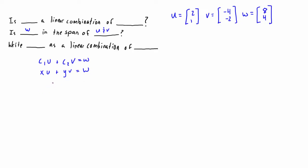So what we want to do is, just like in the last video, we set this up as an augmented matrix. Whatever is on the right-hand side goes in the furthest right column, and whatever these vectors are goes in all the other columns on the left-hand side. So we start out with the shape of the augmented matrix: a column for U, a column for V, a divider, and then a column for W. So U is (2, 1), V is (-4, -2), and W is (8, 4).